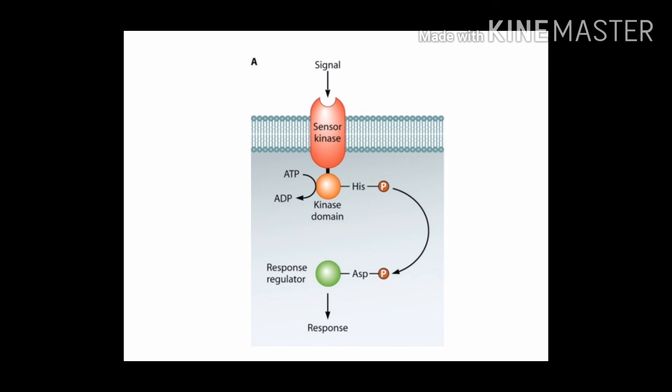As a result, the specific aspartate residue becomes phosphorylated, which in turn causes the response regulator to undergo a conformational change that results in its activation. This activated response regulator brings a particular response by bringing changes in gene expression in response to that particular environmental signal. In this way, the two-component system works in bacteria and allows bacteria to respond to various environmental signals by bringing changes in its gene expression.